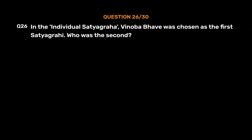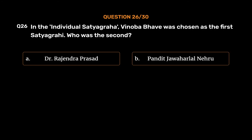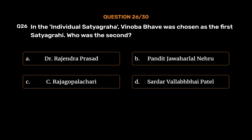Question No. 26. In the individual Satyagraha, Vinoba Bhave was chosen as the first Satyagrahi. Who was the second? Option A, Dr. Rajendra Prasad; Option B, Pandit Jawaharlal Nehru; Option C, C. Rajagopalachari; Option D, Sardar Vallabhbhai Patel. The correct answer is Option B, Pandit Jawaharlal Nehru.